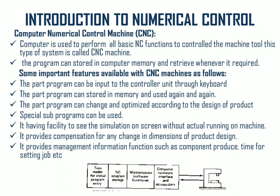This is the next evolutionary stage as we have seen in the previous lecture. A CNC machine is used to perform all basic functions which are performed in NC machines to control the machine tool. The program can be stored in computer memory and retrieved whenever required. Some important features available in CNC machines are as follows.